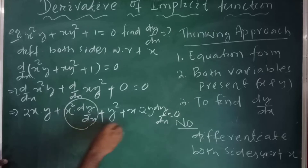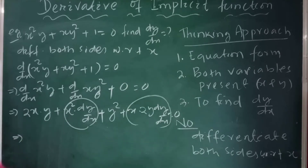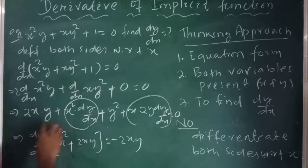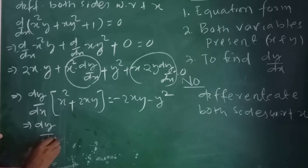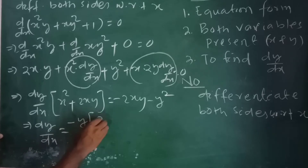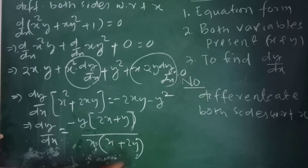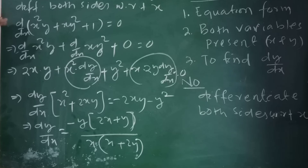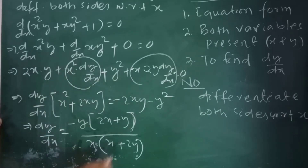Now collect the terms containing dy by dx on the left side. dy by dx into (x squared plus 2xy) equals minus 2xy minus y squared. Therefore dy by dx equals minus y(2x plus y) divided by x(x plus 2y).